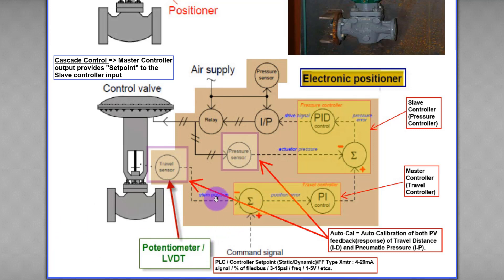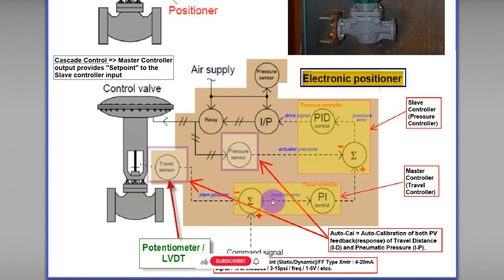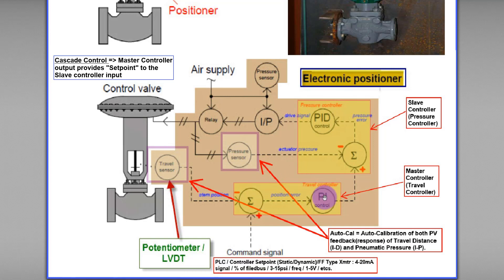The other input is the process variable — feedback from field instruments. The difference between the set point (command signal) and the process variable feedback from the sensor in the field will produce a position error to the PI controller of the master controller. PI stands for Proportional-Integral controller.